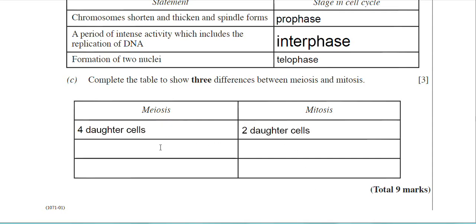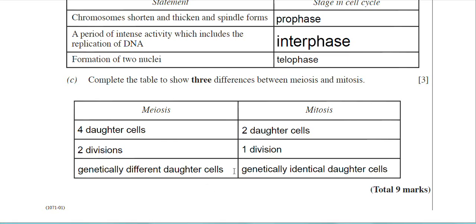Lastly, an important difference here is that the daughter cells produced during meiosis are genetically different. Always remember to say they're genetically different. Don't just say they're different. That won't get you any mark at all. So genetically different daughter cells produced in meiosis. And with mitosis, the daughter cells show no genetic variation. They're actually identical in terms of their DNA. That's completed question seven.